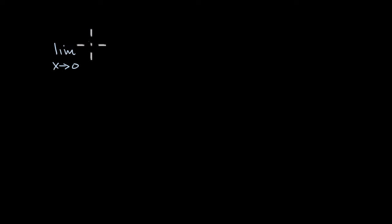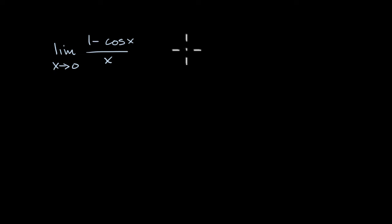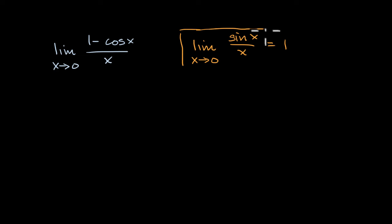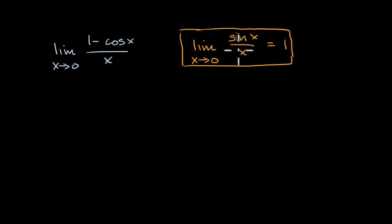What we want to do in this video is figure out what the limit as x approaches zero of one minus cosine of x over x is equal to. We're going to assume we know one thing ahead of time: the limit as x approaches zero of sine of x over x is equal to one. I'm not going to reprove this in this video, but we have a whole other video dedicated to proving this famous limit, and we do it using the squeeze or sandwich theorem.